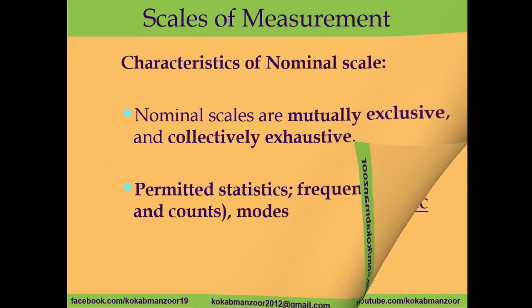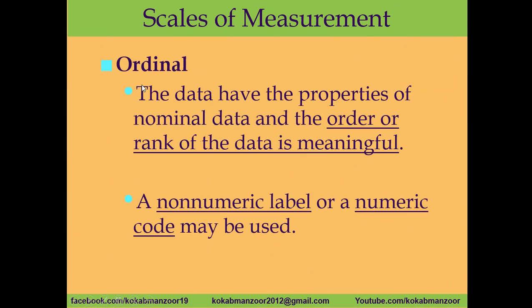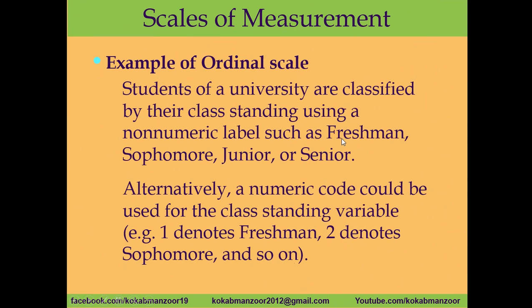What is the ordinal scale? Ordinal means along with categorizing the data, we also want an order of preference or rank the data in some meaningful form. In nominal we just categorize; now we also impose an order or rank. For example, in a university we can categorize students as freshman, sophomore, junior, and senior — there is a rank. We cannot reverse it, because a student enters as a freshman, then becomes sophomore, junior, and senior.